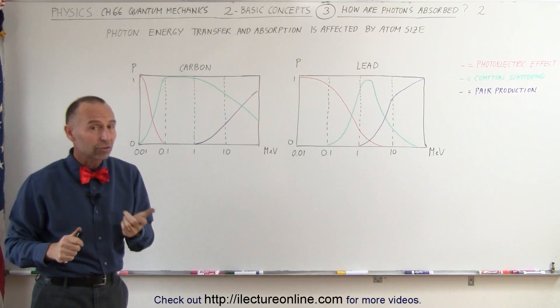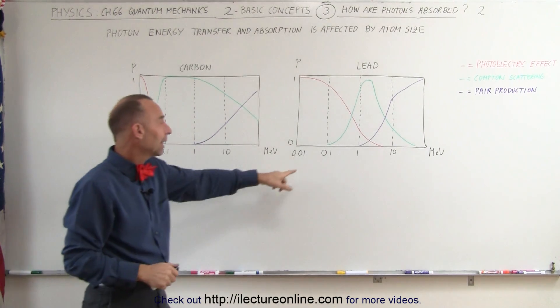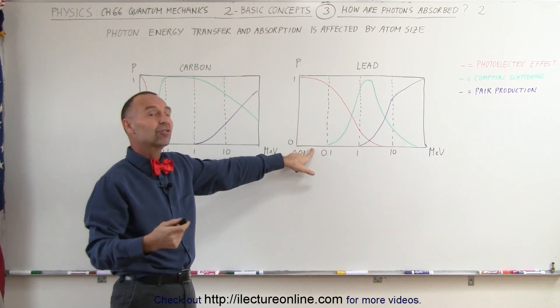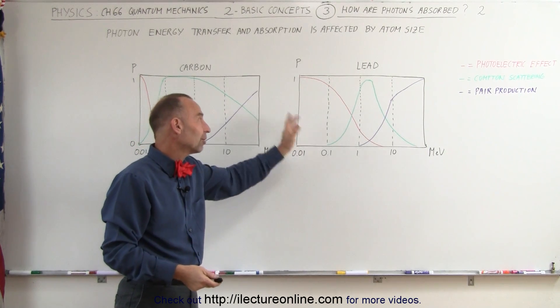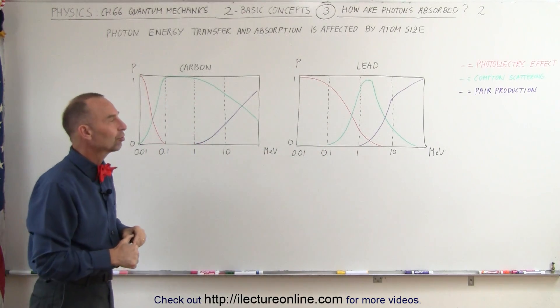But it's important to understand that that does happen so that you don't assume that when you have a lead atom that the photoelectric effect stops at 100 kiloelectron volts, that it just continues with high probabilities until much higher photon energies are found.